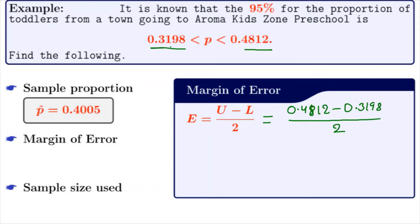When we subtract these two numbers and divide by 2, we get E equals 0.0807. So this is our margin of error.